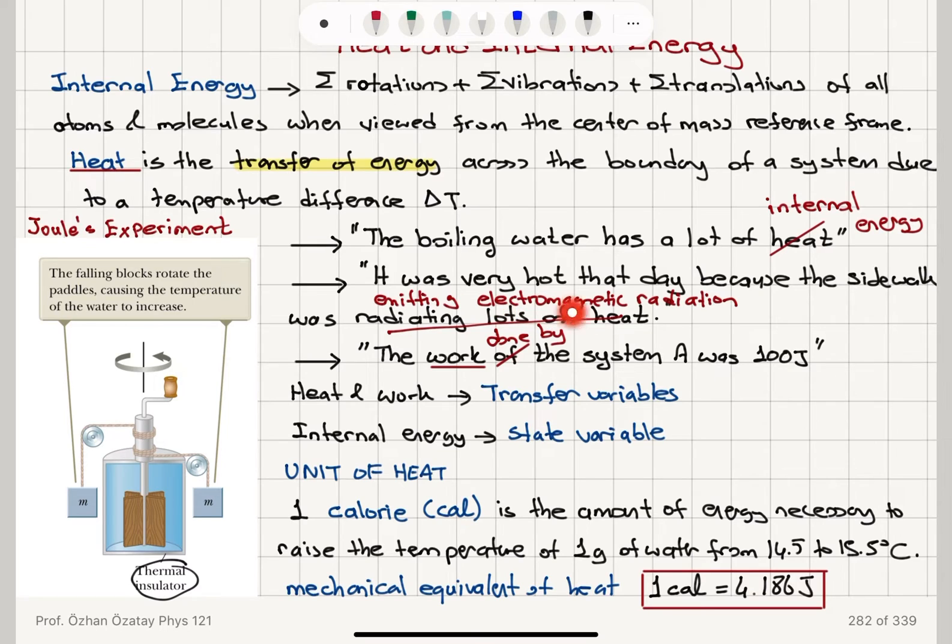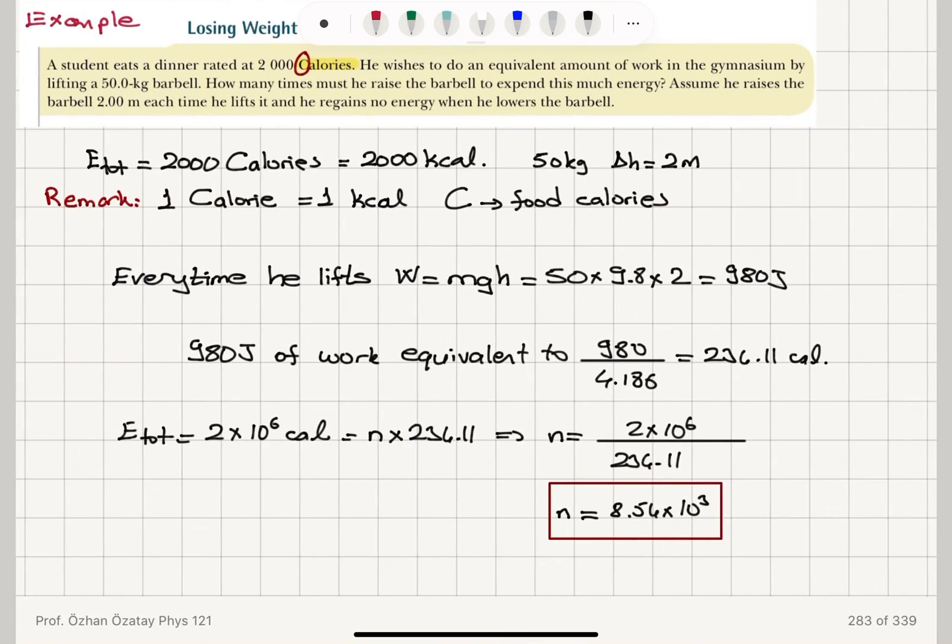So that's energy transfer by electromagnetic radiation. So the unit of heat is calorie. One calorie, one calorie with lowercase letter C, is the amount of energy needed to raise the temperature of one gram of water from 14.5 to 15.5 degrees C. One calorie is 4.186 joules. It's the equivalent of work that has to be done. That's as demonstrated by Joule's experiment.